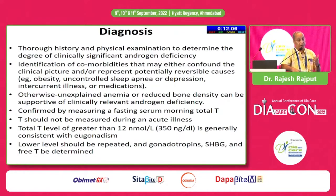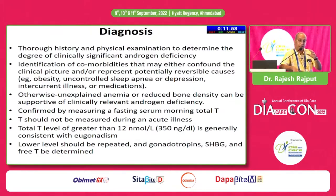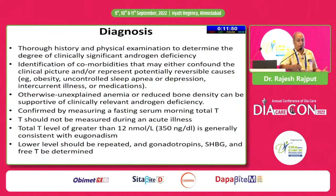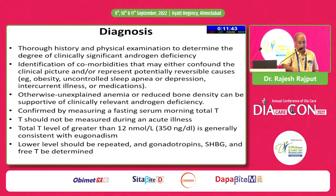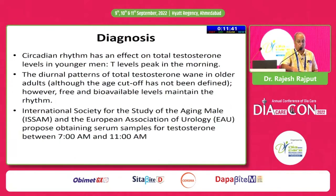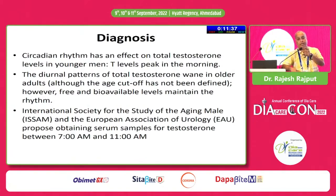Unexplained anemia in a male is a very good indicator, because testosterone has a positive effect on hematopoiesis. In a male, unexplained decrease in bone density — there is no menopause-like event in males — so a 50-year-old male presenting with decreased bone density should raise suspicion of hypogonadism. We should measure testosterone, but remember: testosterone has a circadian rhythm and is best measured between 7 AM and 11 AM. Do not measure at any point of the day.